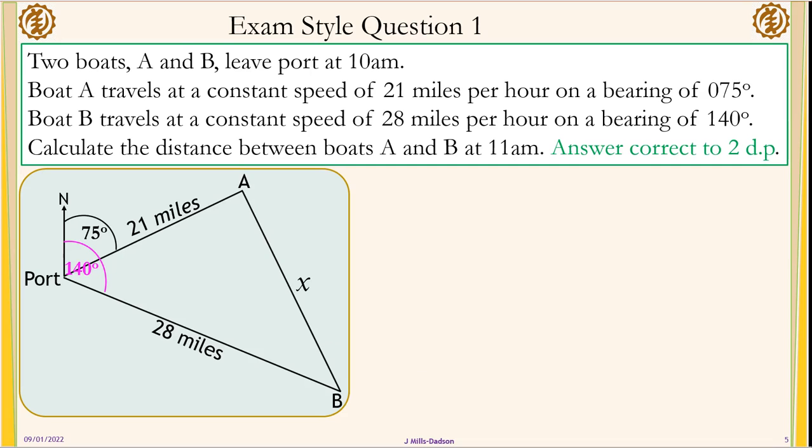Two boats A and B leave port at 10am. Boat A travels at a constant speed of 21 miles per hour on a bearing of 75 degrees. Boat B travels at a constant speed of 28 miles per hour on a bearing of 140 degrees. Calculate the distance between boats A and B at 11am.